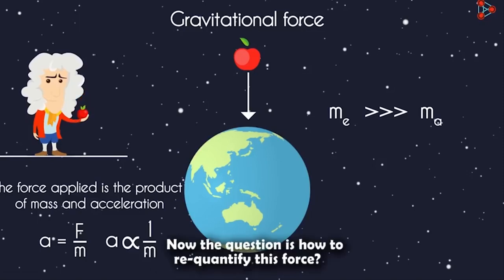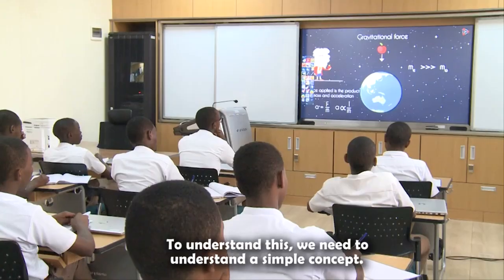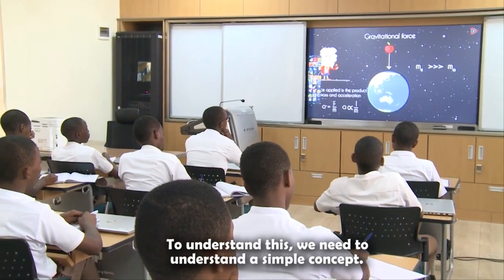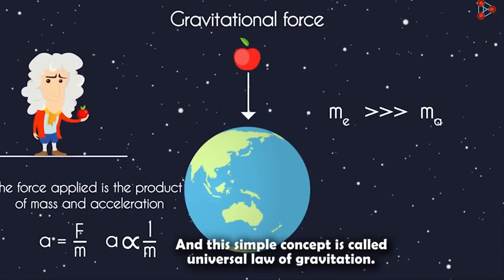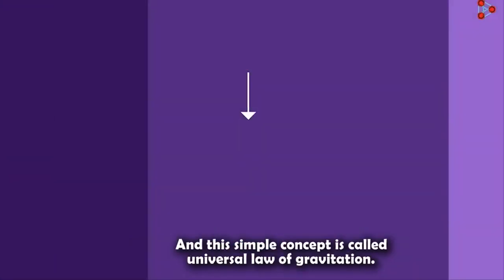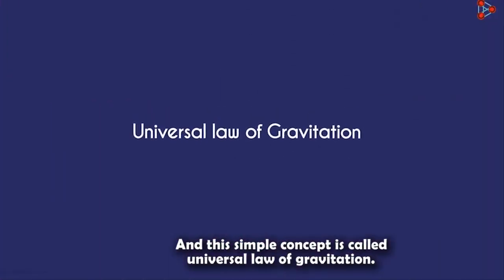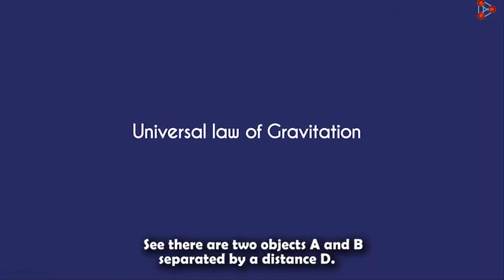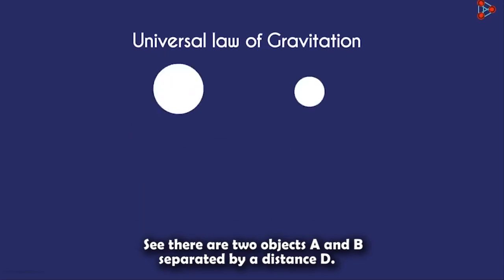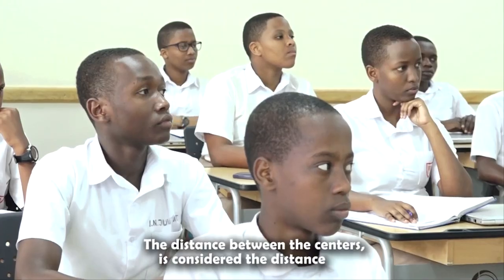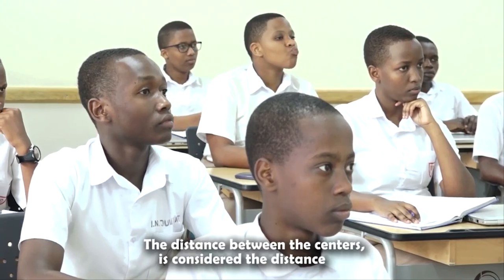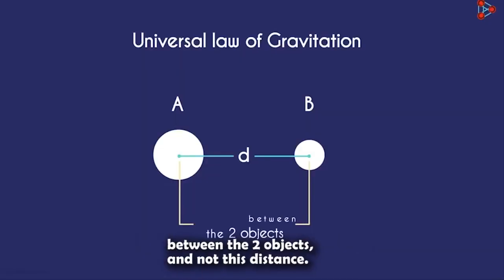Now the question is, how do we quantify this force? To understand this, we need to understand a simple concept called the Universal Law of Gravitation. Say there are two objects A and B separated by a distance d. The distance between the centers is considered the distance between the two objects.